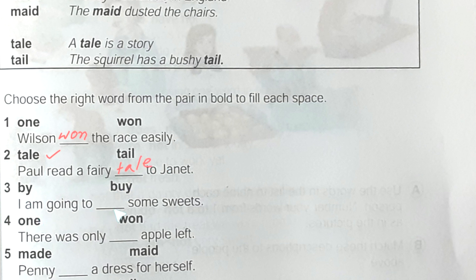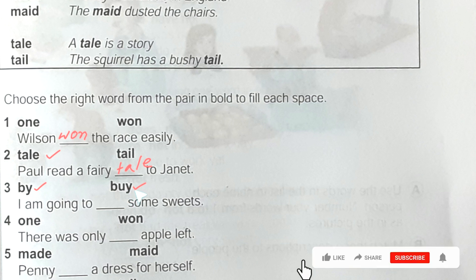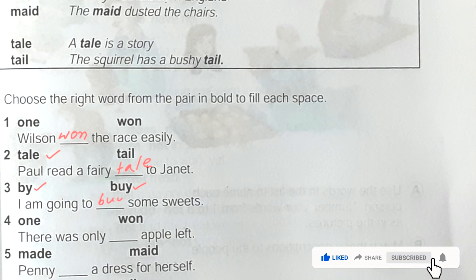Number three: I'm going to dash some sauce. We cannot use 'by' here because we have to buy it — we have to give money. So here we will put the word 'buy.'